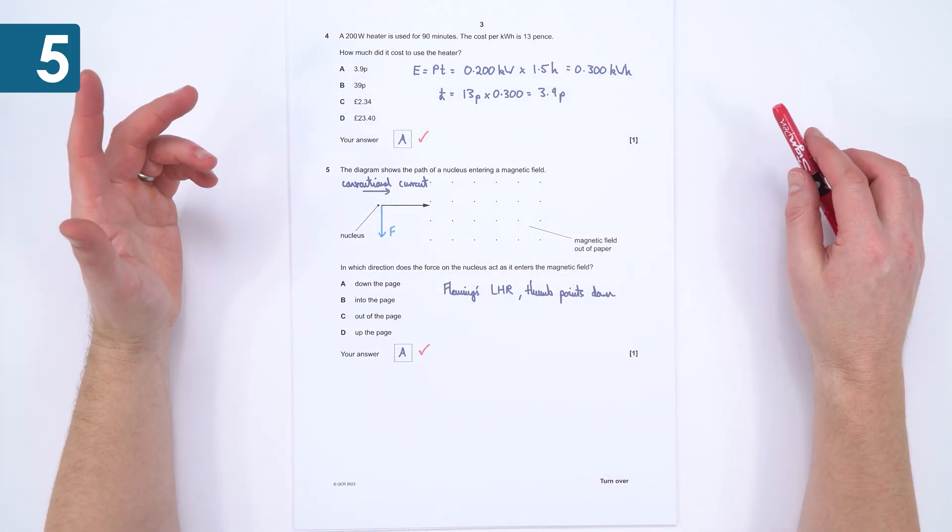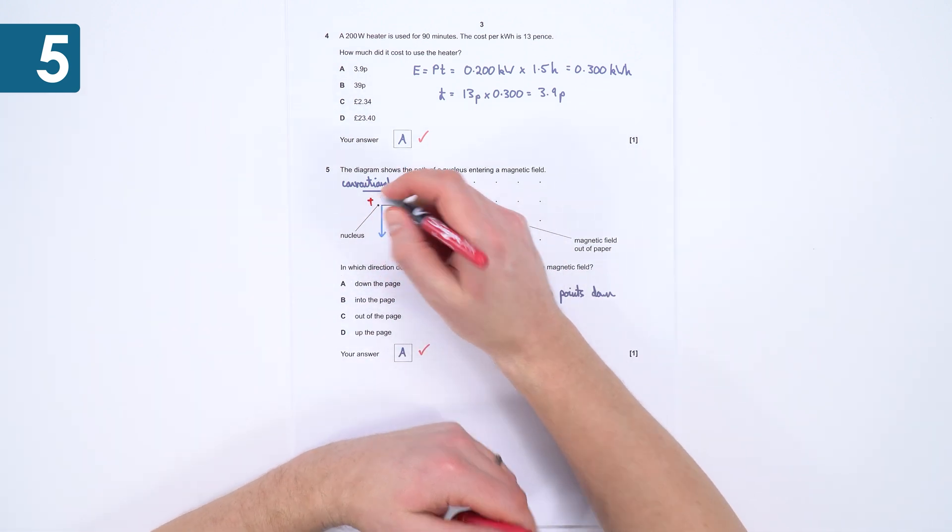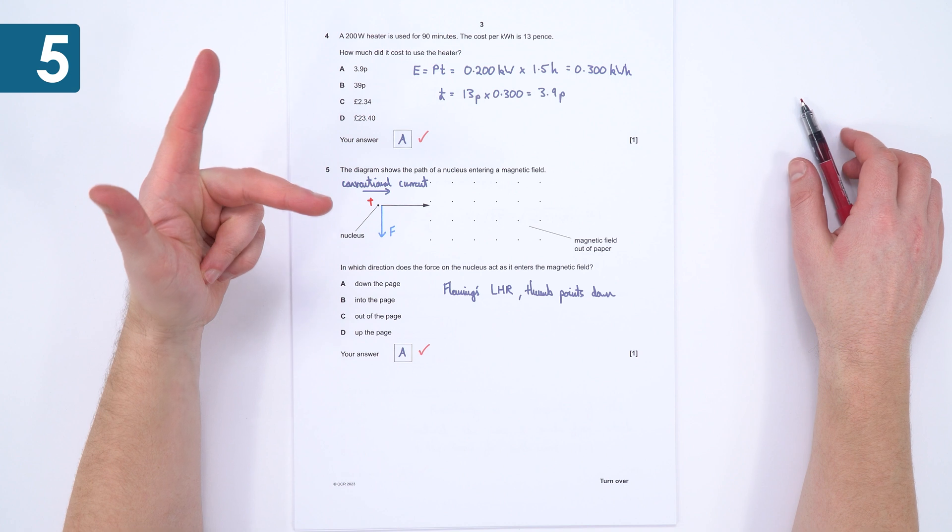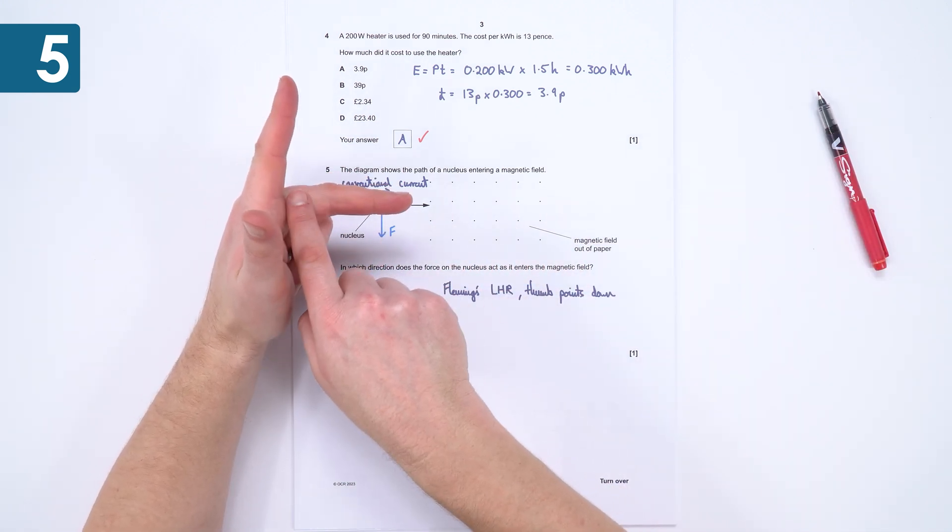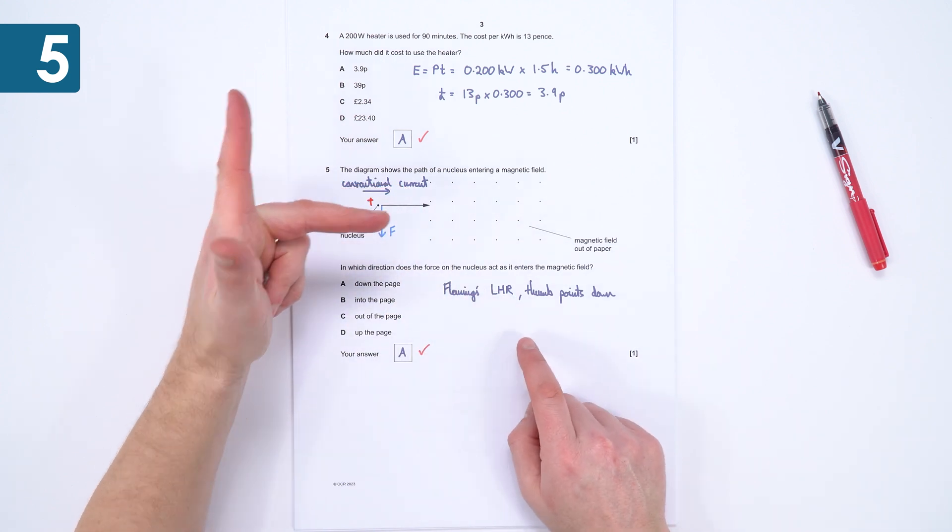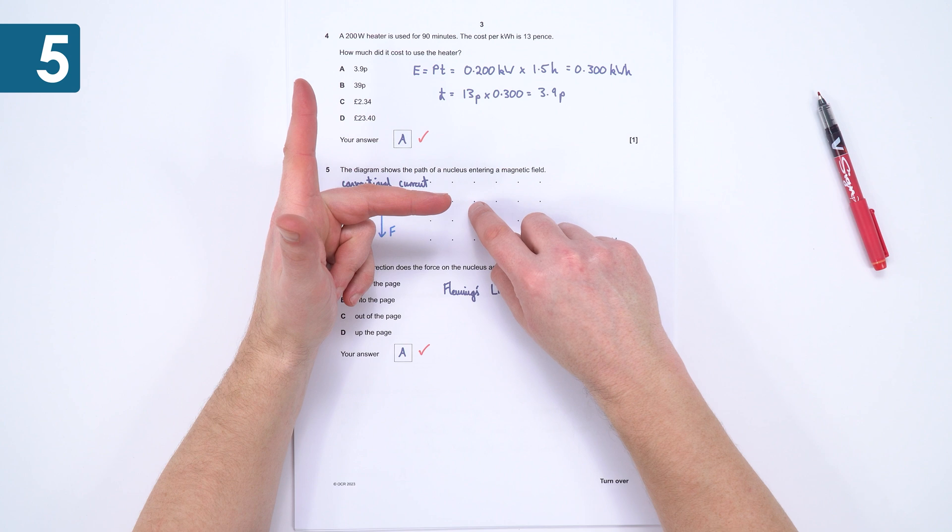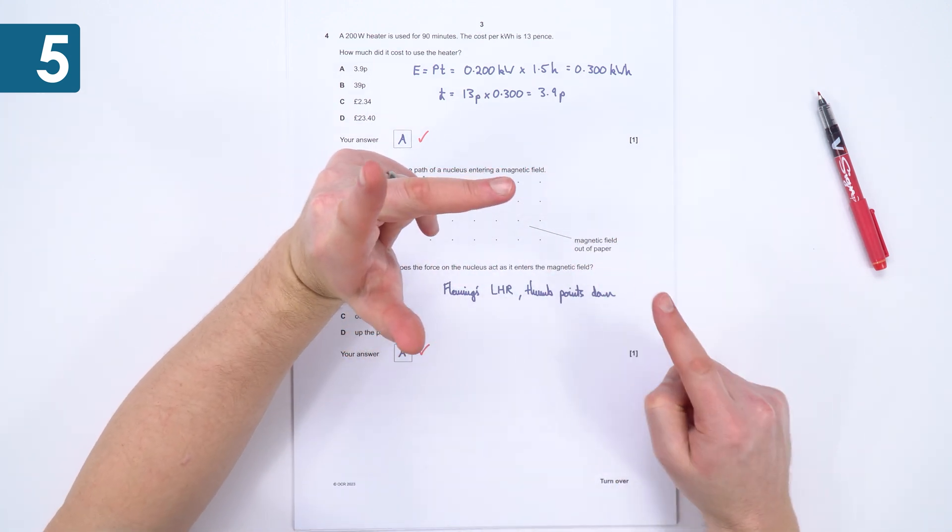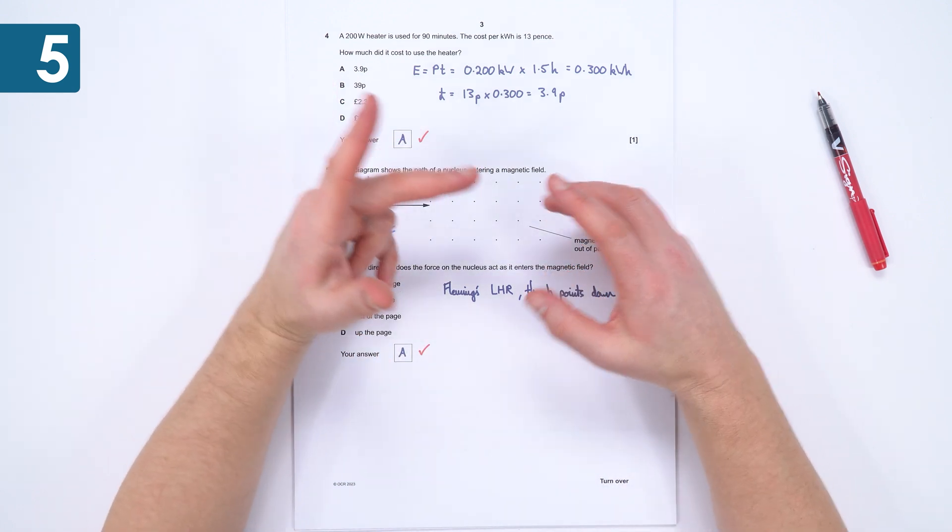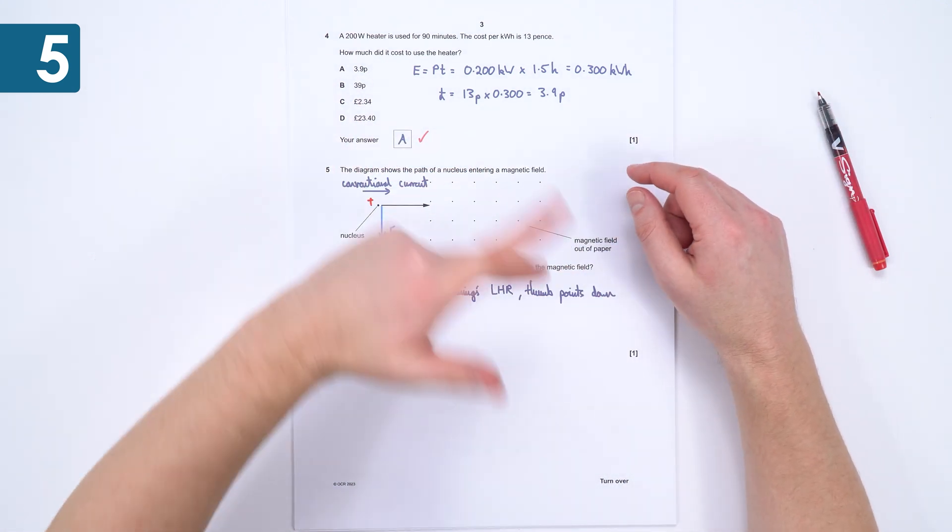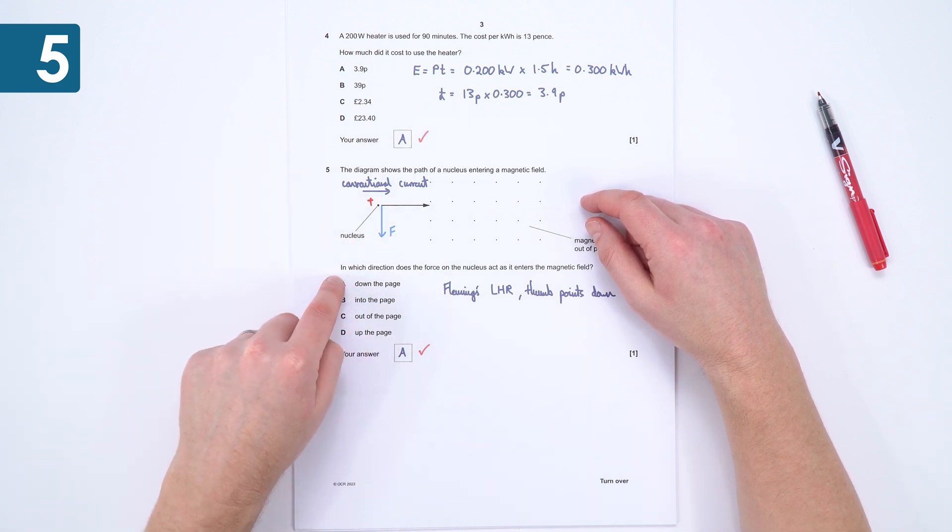Number five, actually quite a nice question. If it's a nucleus, it must have a positive charge, and that means we can then use Fleming's left-hand rule. So conventional current is positive, effectively the direction that positive charges are moving, so that's going to be in this direction. We've got the field lines as dots, so they're coming towards us, so that's our conventional current there, and that means my thumb is pointing in this direction. I'm sure if you did this in the real exam, you'd have a whole exam hall of people using their left hands, and that means there's going to be a force down, so the answer is A down the page.